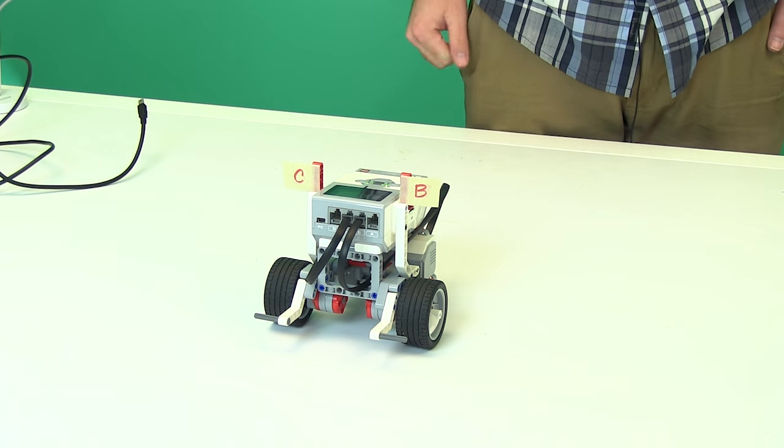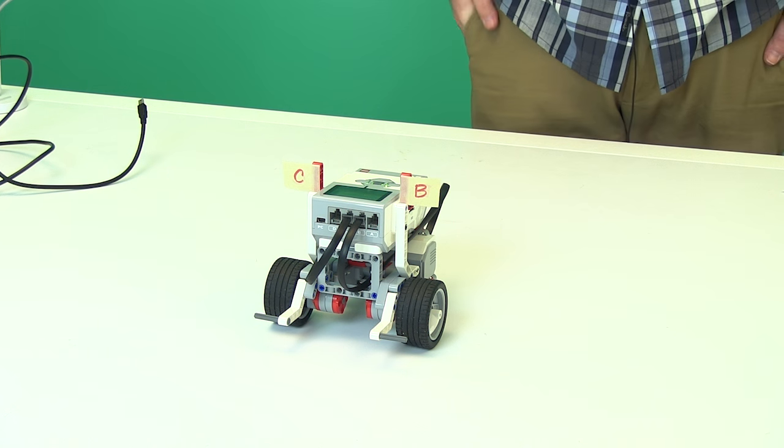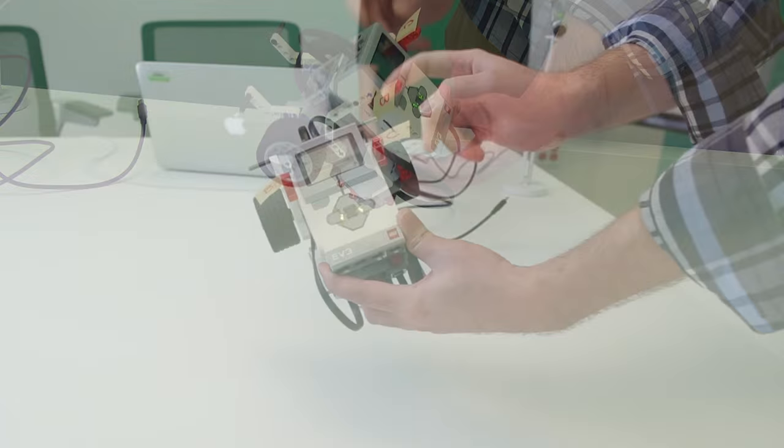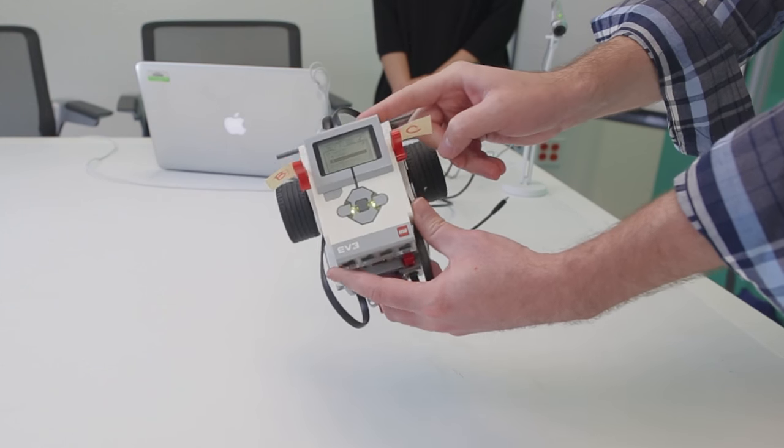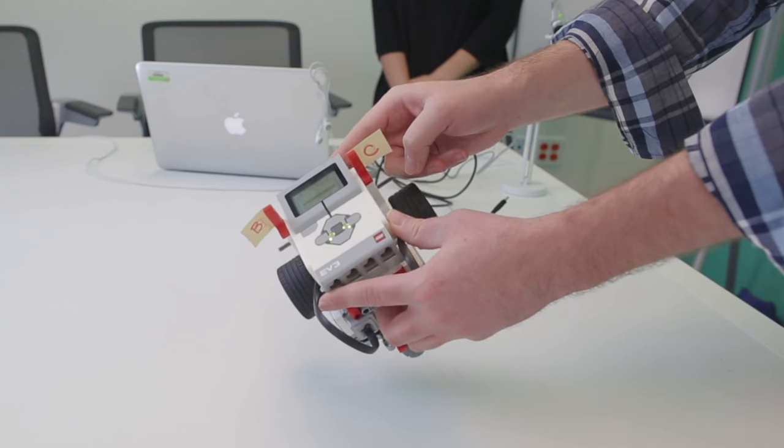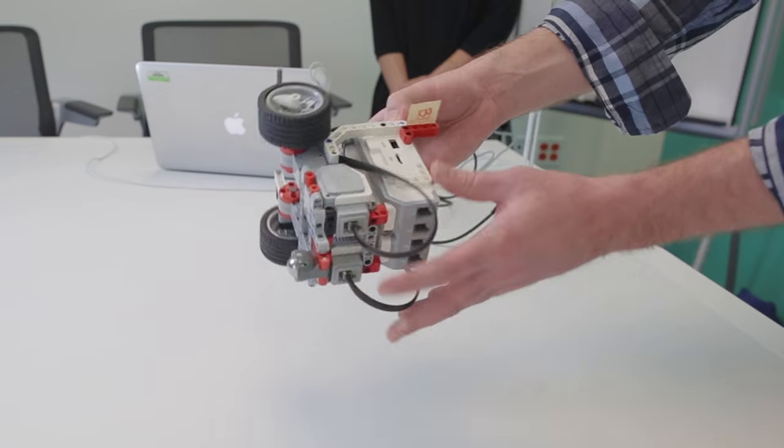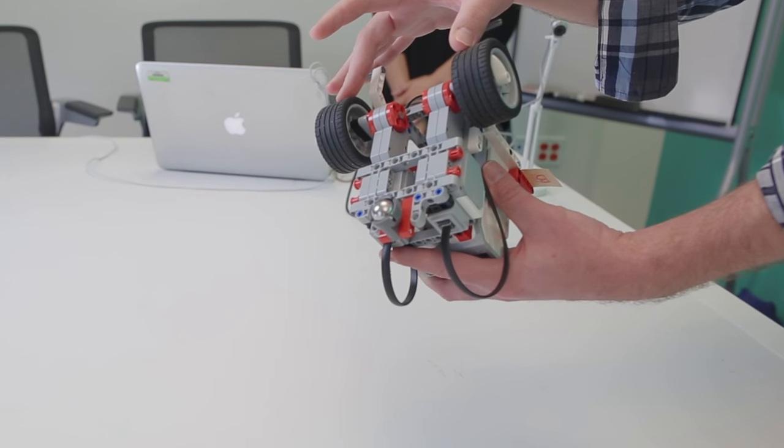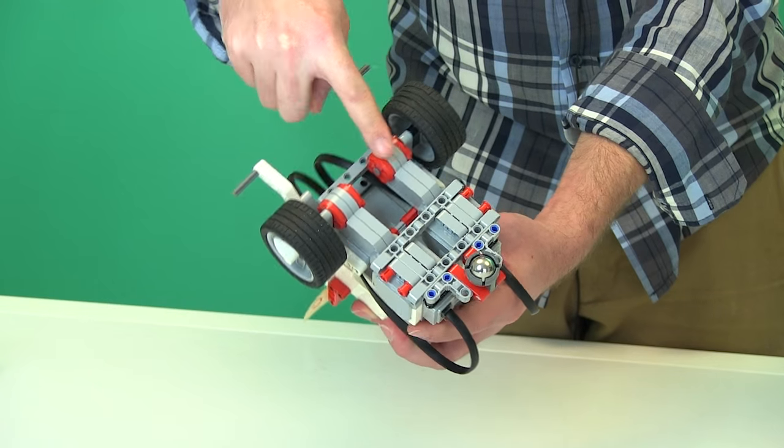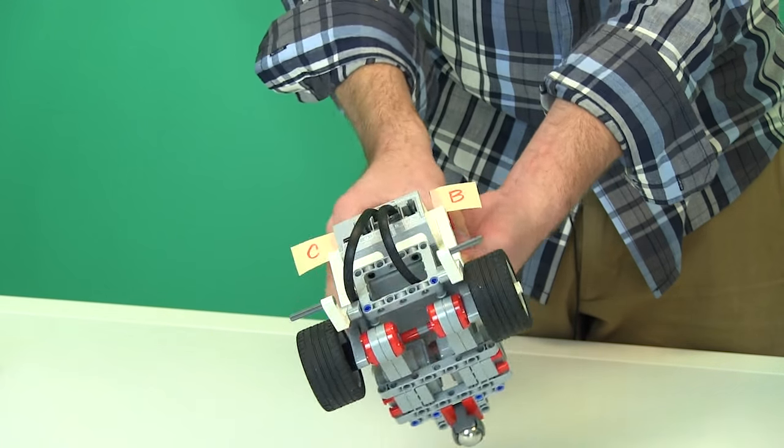So here we have the standard robot that the instructions in the kit will guide you to build. I want to point out some of the main components on this robot. First is the brick, which is the computer or brain of the robot. Any program that you want to run needs to be downloaded onto this before the robot will run. The other main components are two motors attached to two main wheels. These are the driven wheels driven by these two motors. And the third component is our follower wheel, which is a bearing in a plastic slot.